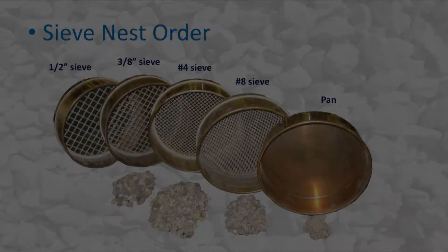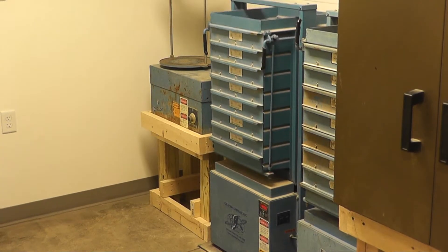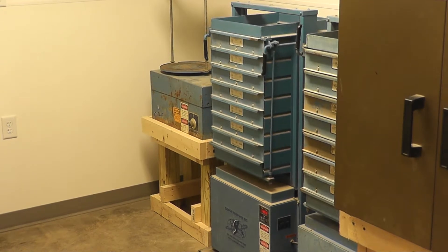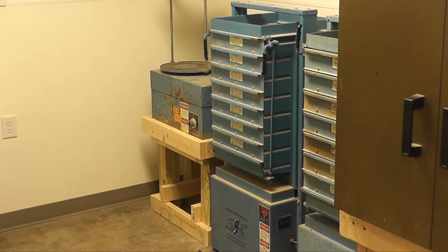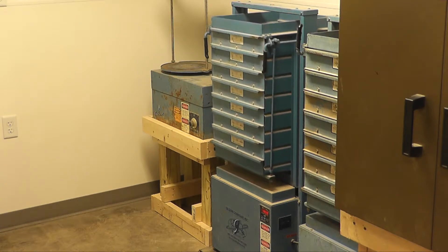The sieves are nested in order of opening sizes, starting with the largest sieve at the top of the nest and ending with the smallest sieve at the bottom of the nest. A pan is placed below the bottom sieve. The sieve nest with the sample is then placed into an appropriate mechanical shaker and shaken for a period of time to ensure the sample is divided into the various sizes.